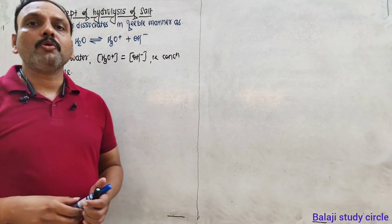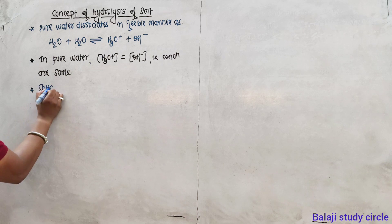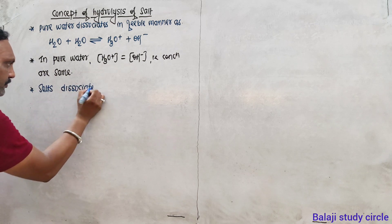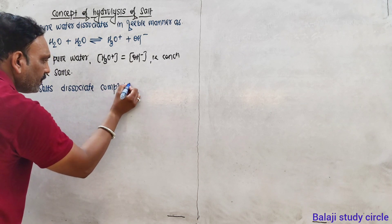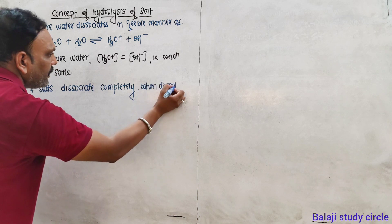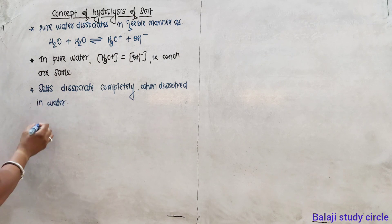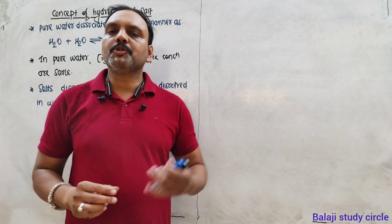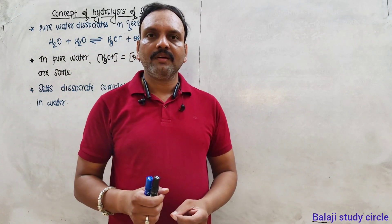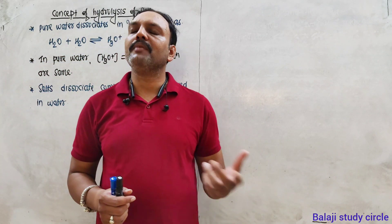But when we add salt, salts dissociate completely when dissolved in water. Now remember, if salt ions — either anion or cation, or both — react with water, then one of the ions of water will get consumed.